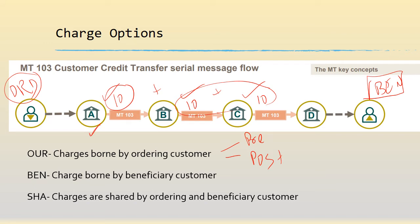And later on, once the payment is done, bank B and bank C send a charge claim advice in the form of an MT 191. So when bank A receives the MT 191 with 10 USD on it, it debits the ordering customer 10 USD for bank B's charges and 10 USD for bank C's charges. So these are the two different flavors — pre and post — in OUR.